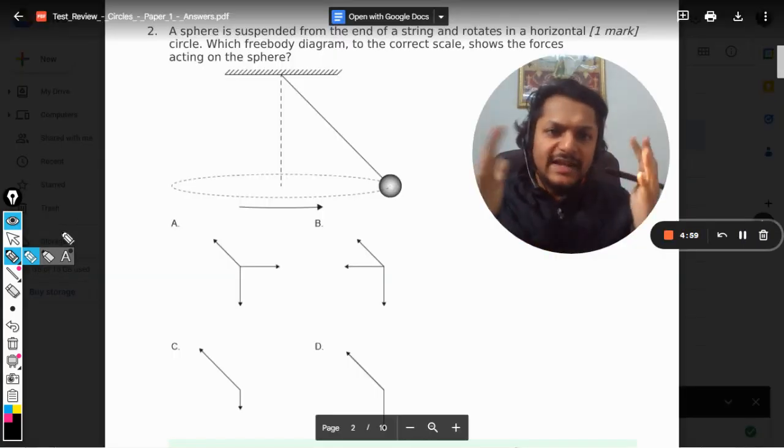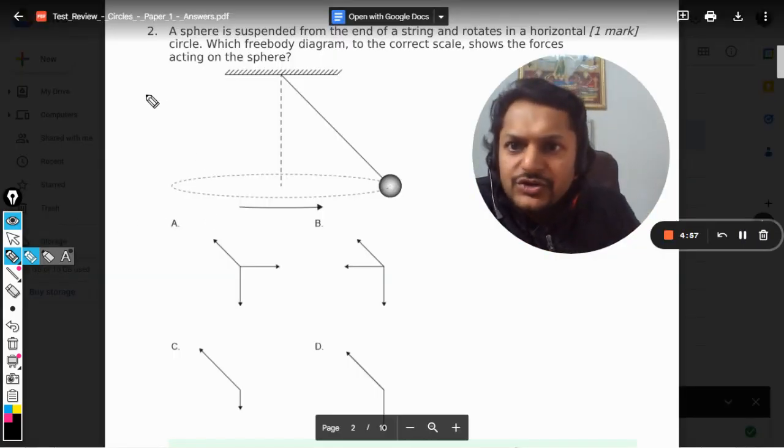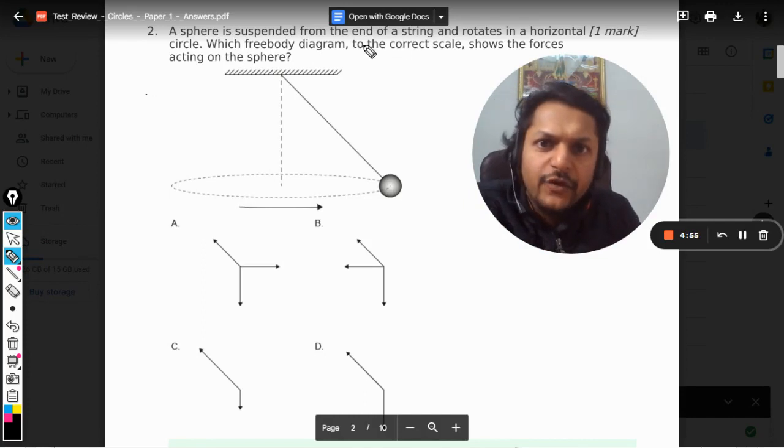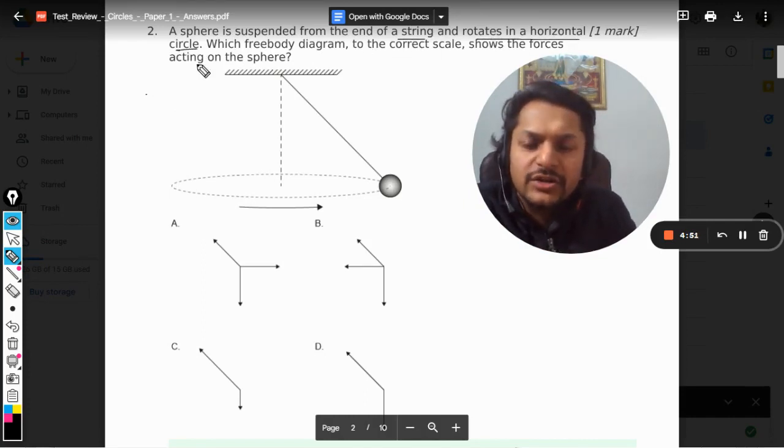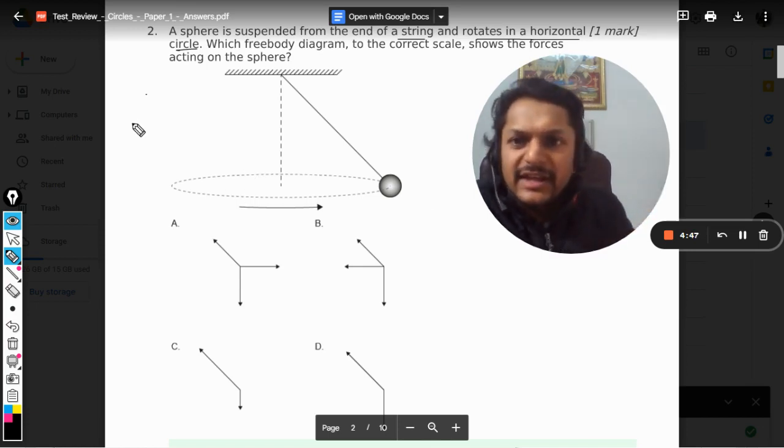Okay dear students, let us see what is there in this question. A sphere is suspended from the end of a string and rotates in a horizontal circle. This kind of pendulum is given a very special name - this is known as a conical pendulum.